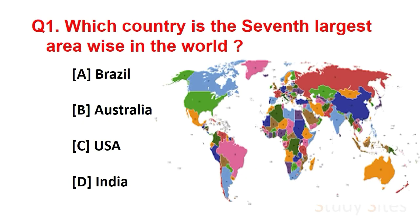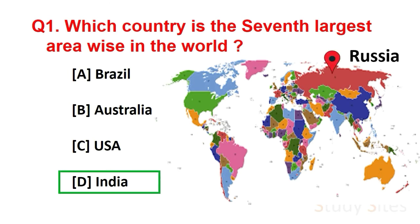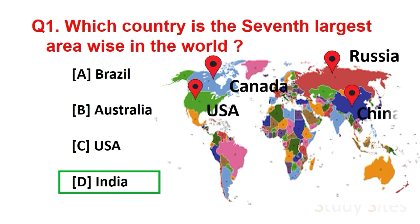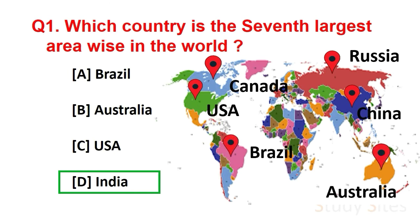Question number 1. Which country is the 7th largest area wise in the world? Answer is India. The largest country is Russia, 2nd largest is Canada, 3rd largest is USA, 4th largest is China, 5th largest is Brazil and 6th largest is Australia.